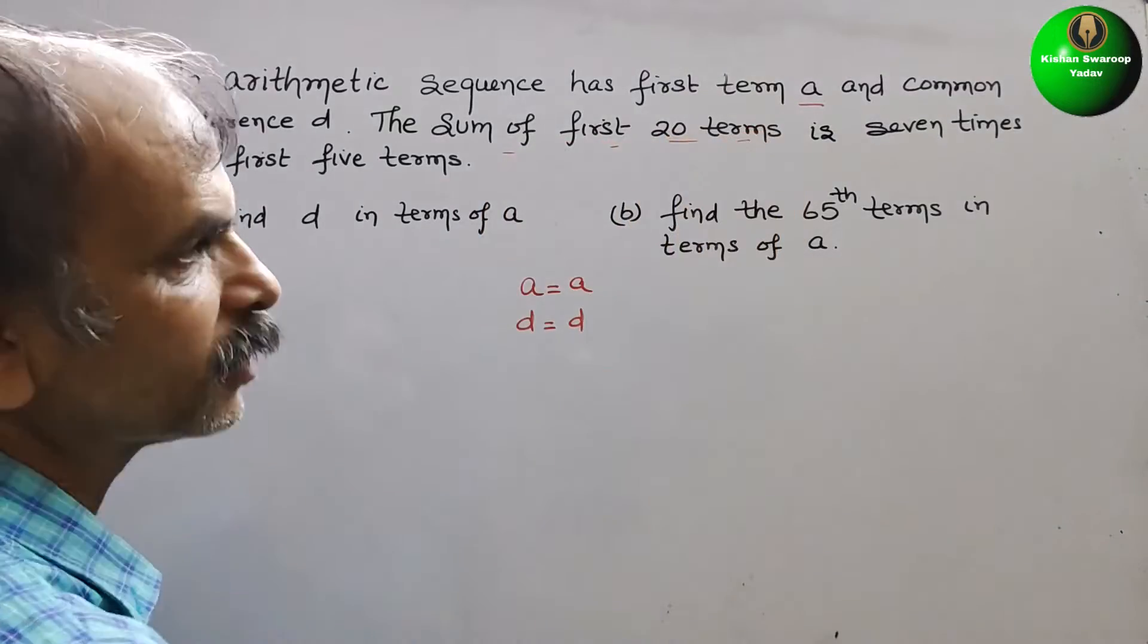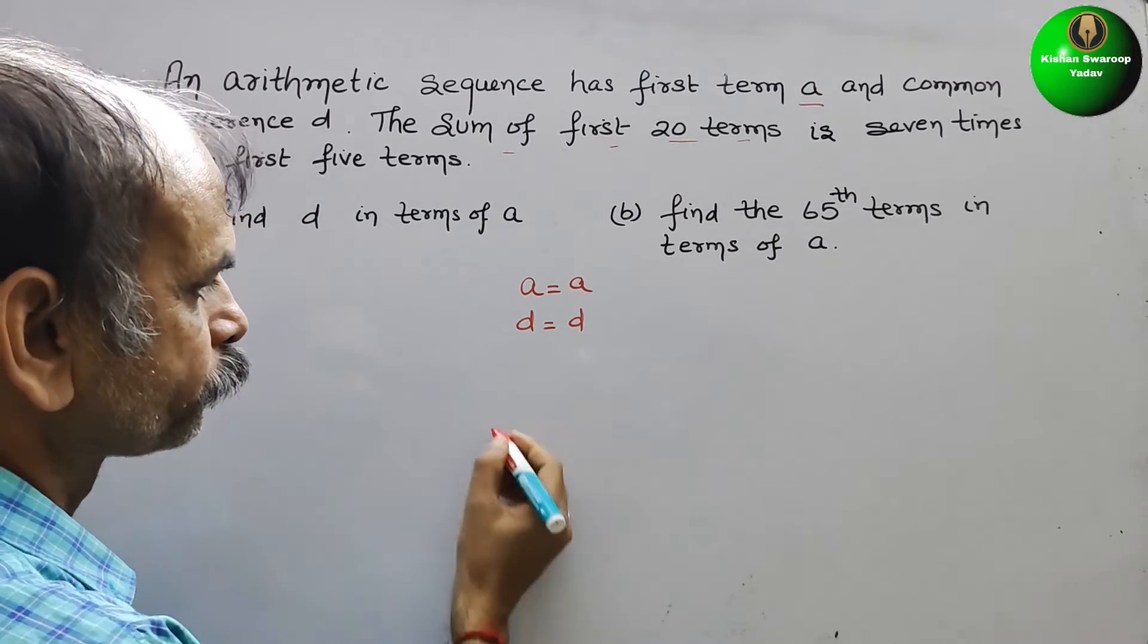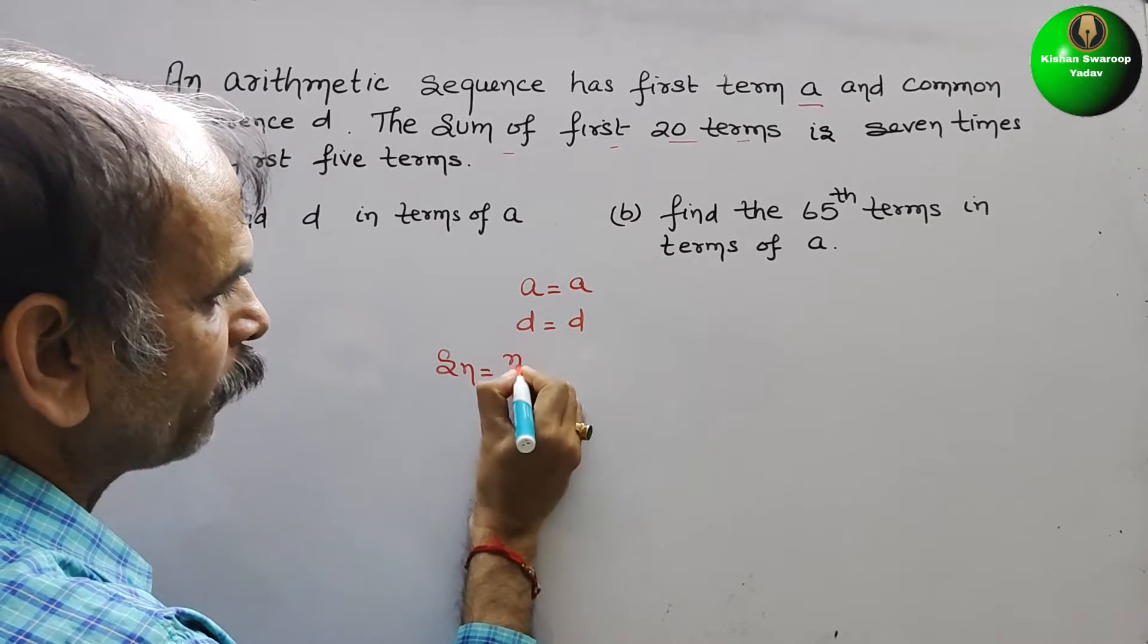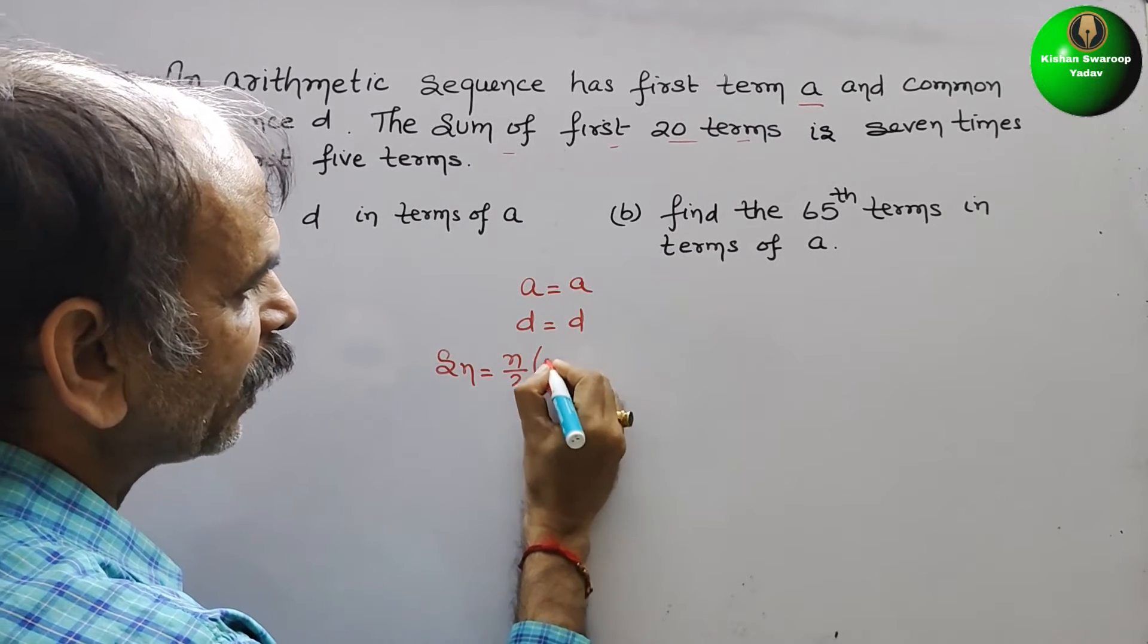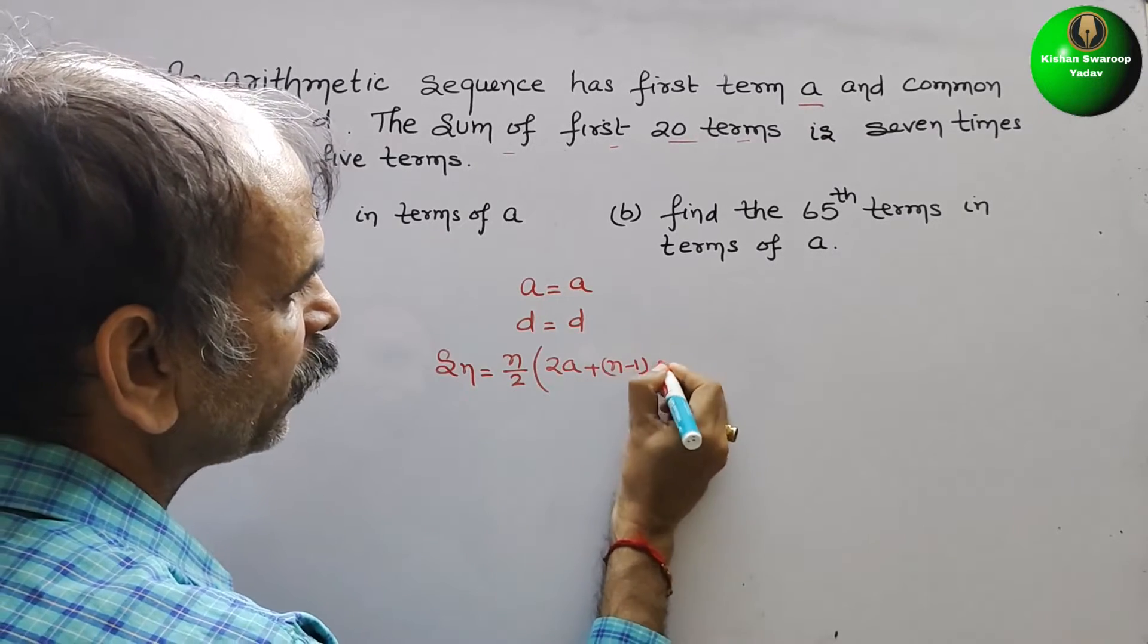The sum of first 20 terms. So we will write the formula. That is your S_n equals n by 2, and here comes 2A plus n minus 1 into D.